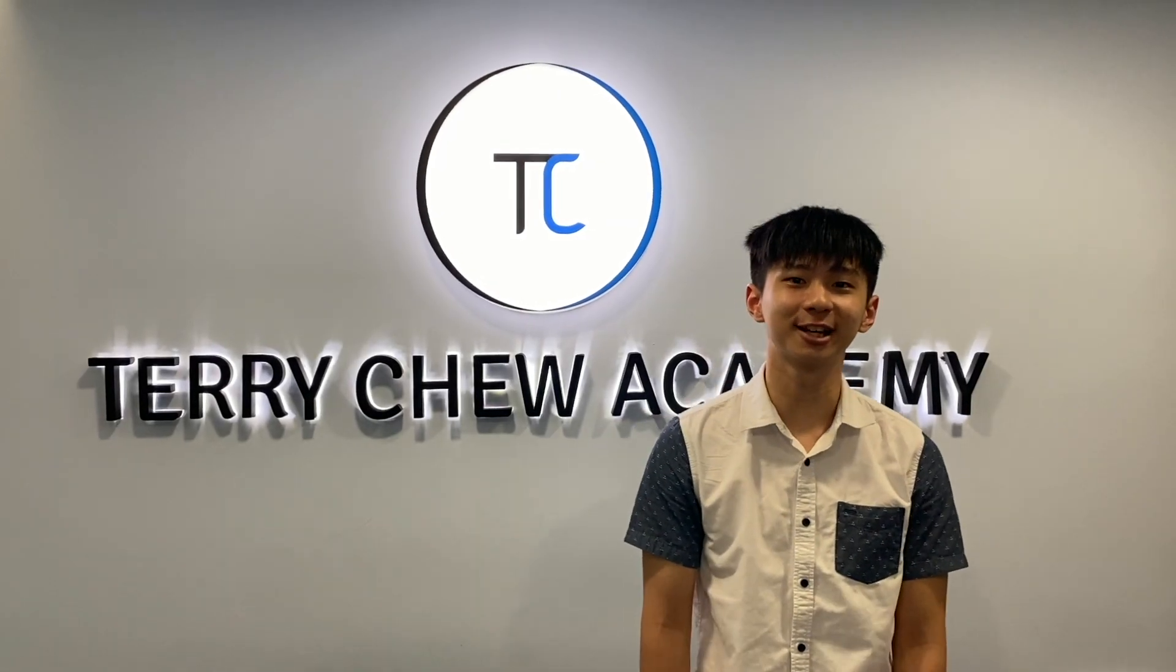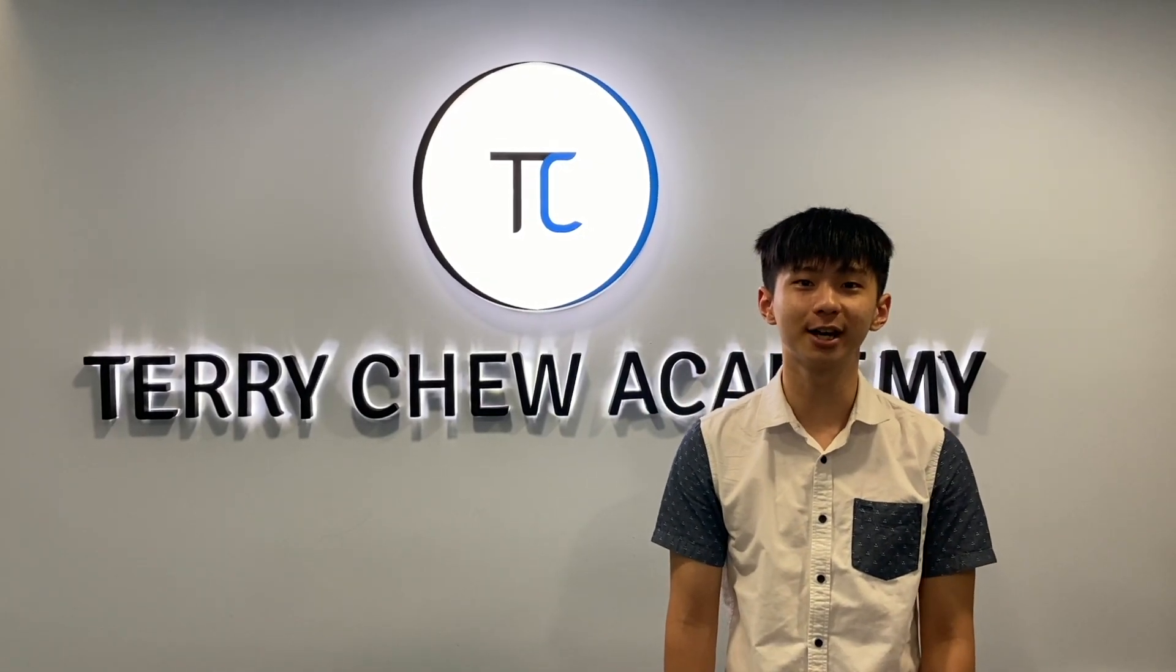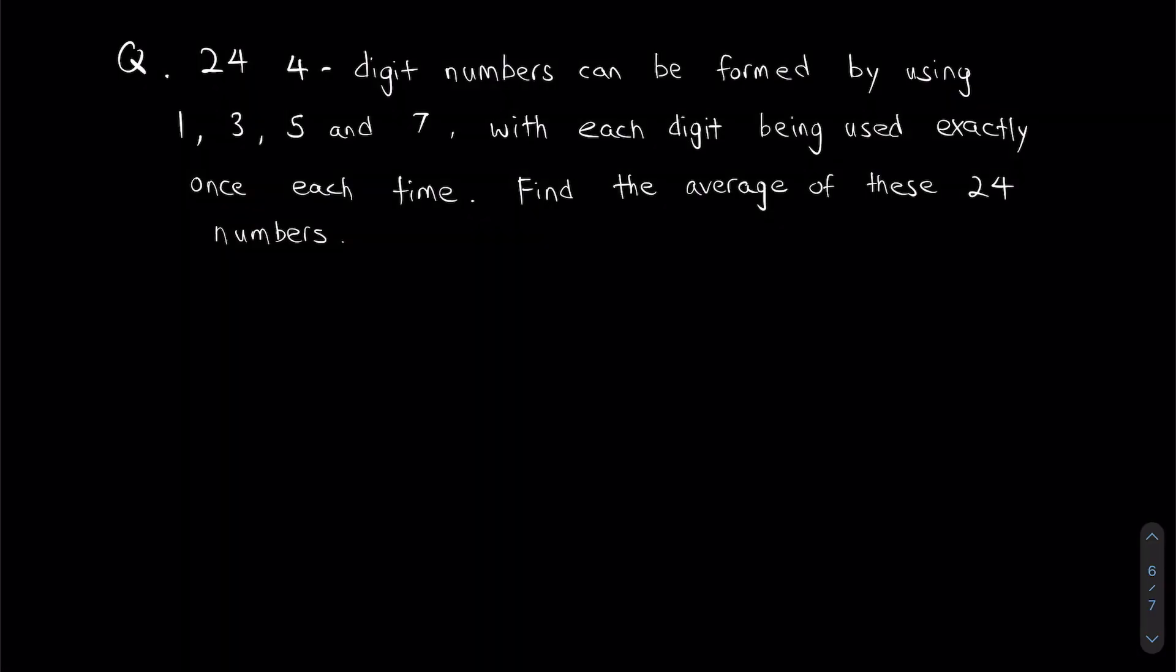Hello everyone, thank you for checking out this video. You are with Coach Tien Yu from Terry Chiu Academy. Now we're going to solve this question together. Let's read the question first: 24 four-digit numbers can be formed by using 1, 3, 5, and 7, with each digit being used exactly once each time.